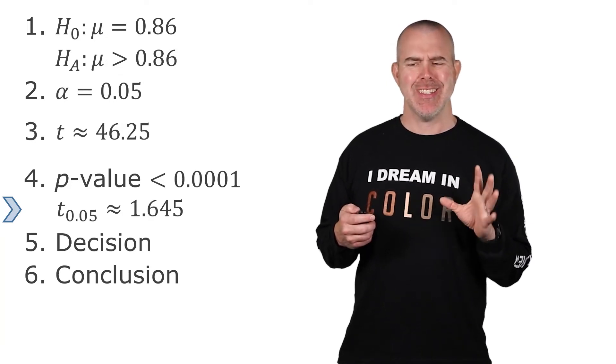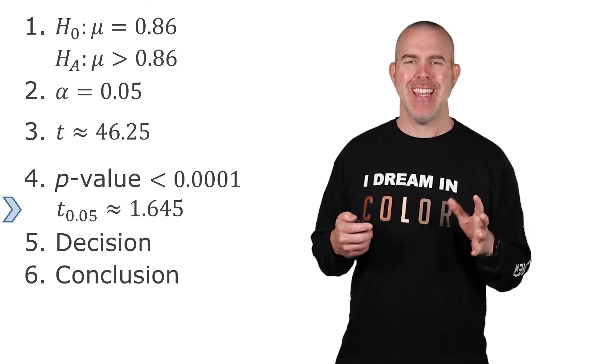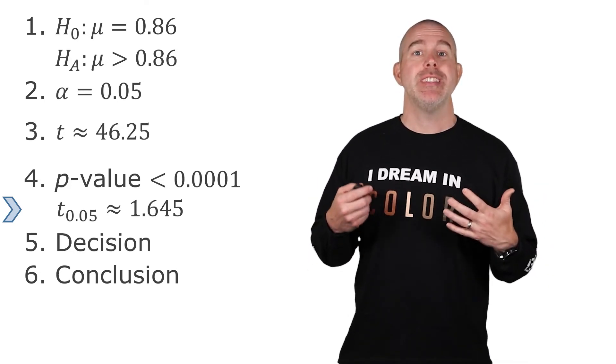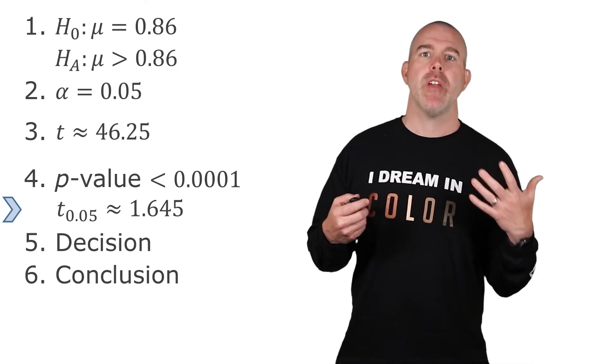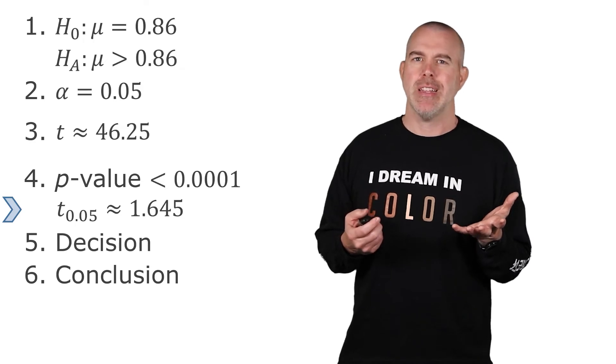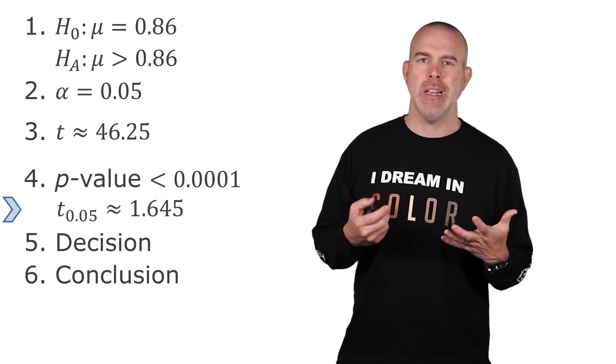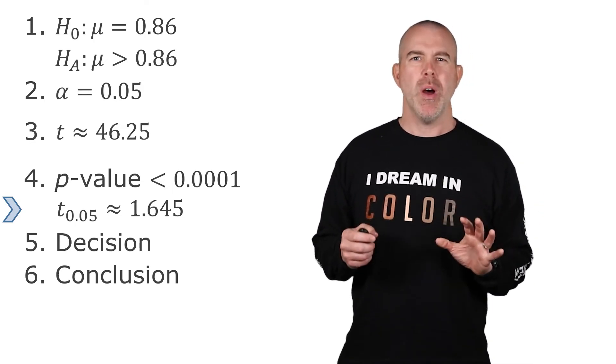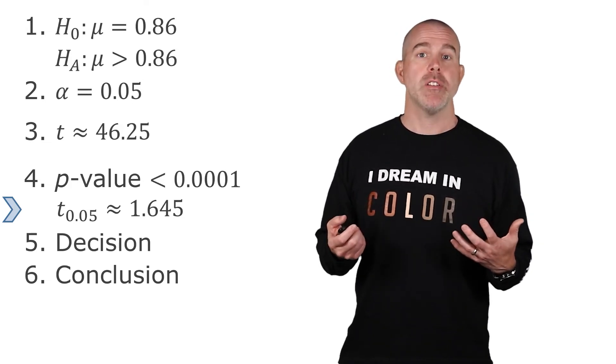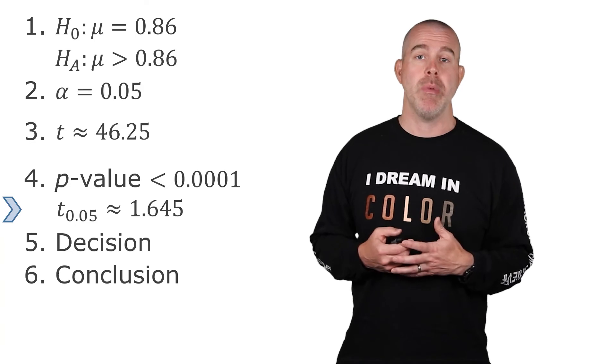And yes, as the sample size increases, the T distribution becomes very similar to the normal distribution. So when you have a super large sample size like this, there's really no difference between the Z and the T. But we do want to get in the habit of using the T here. Because if we had a smaller sample size, then it would be different. It would be more relevant.